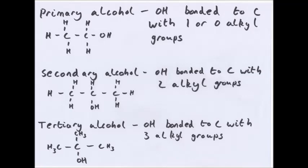There are three types of alcohol: primary, secondary and tertiary. Primary alcohols, such as ethanol, is when the OH is bonded to a carbon with one or zero alkyl groups. Secondary alcohols, when the OH is bonded to a C with two alkyl groups, such as propan-2-ol. And tertiary alcohol is when the OH is bonded to a carbon with three alkyl groups, such as 2-methyl-propan-2-ol.